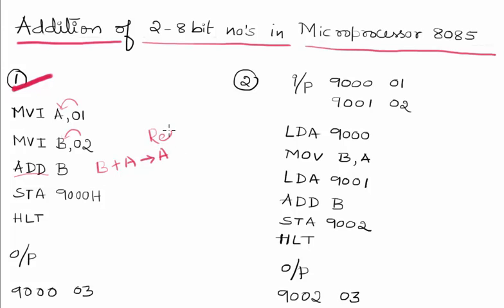Then we can store it using STA instruction, that is STA 9000H, where the result A content will be stored at the specified location. This is the first method.